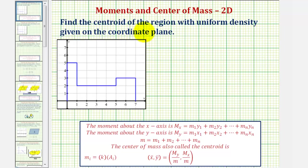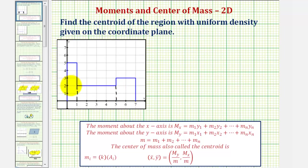We want to find the centroid or center of mass of the region with uniform density given on the coordinate plane. Because we can divide the entire region into three rectangular regions by dividing it here and here, our strategy will be to find the center of mass or centroid of each rectangular region, then find the mass of each rectangular region, and then find the centroid of the entire region by treating the rectangular regions as point masses. We'll call these r sub one, r sub two, and r sub three.